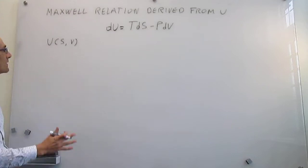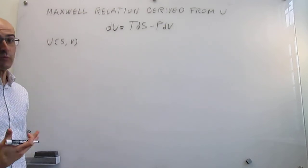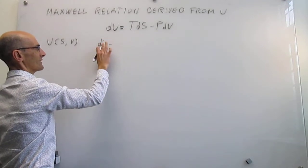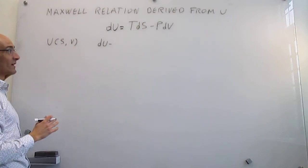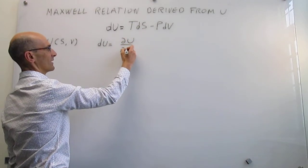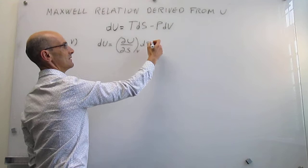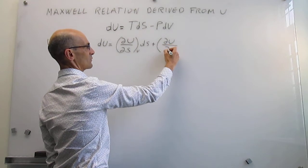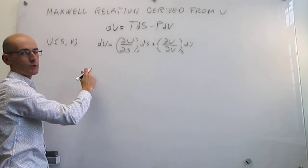At the same time, if we say that the internal energy state function is a function of these two variables, then we can write the total derivative as follows. The total derivative of U is going to be the sum of the partial derivatives with respect to each of the variables: the partial derivative of U with respect to entropy at constant volume times dS, plus the partial derivative of U with respect to volume at constant entropy.